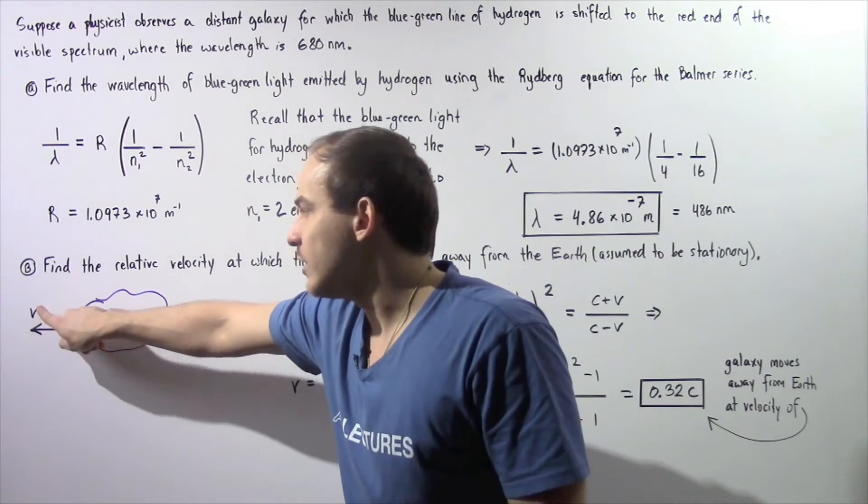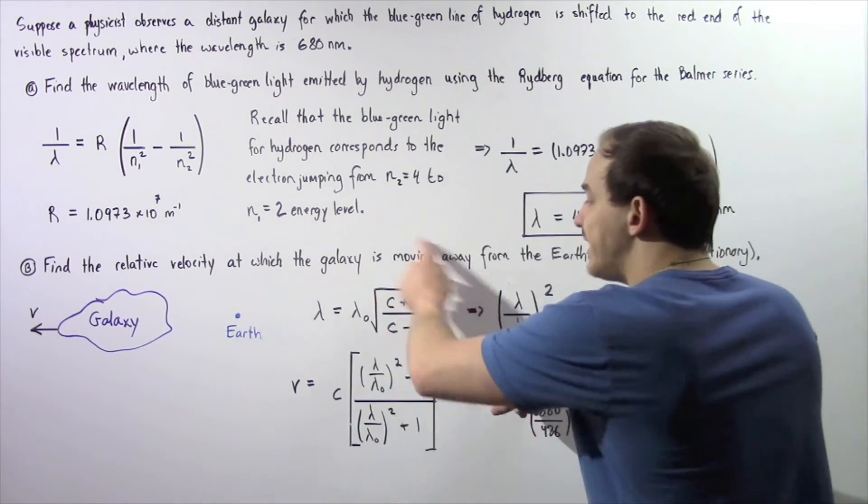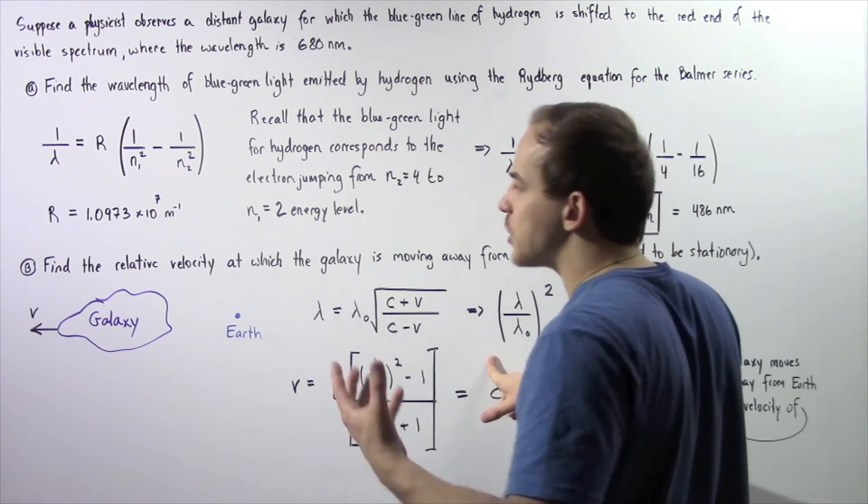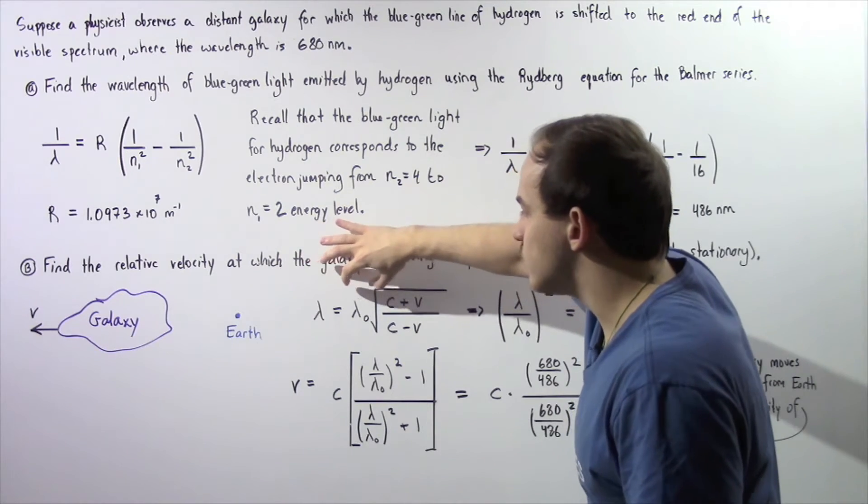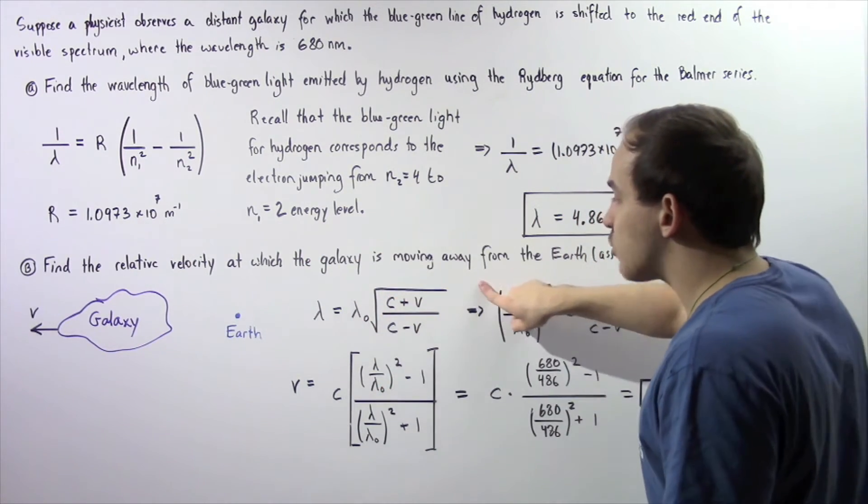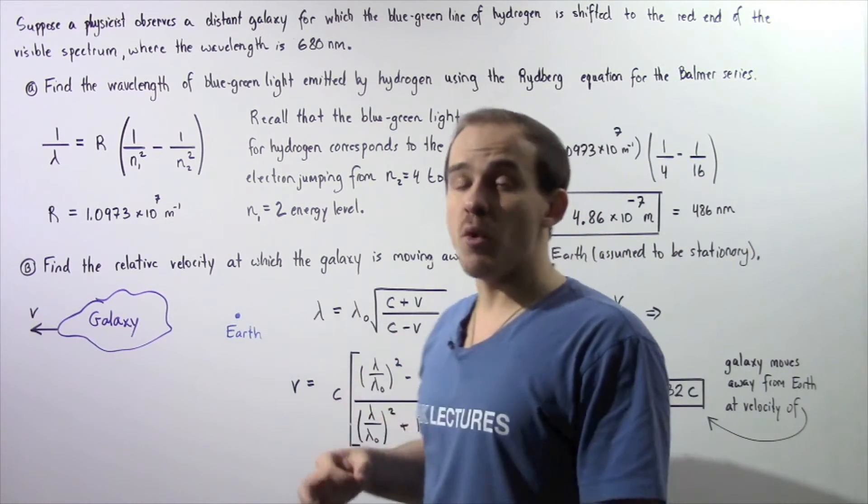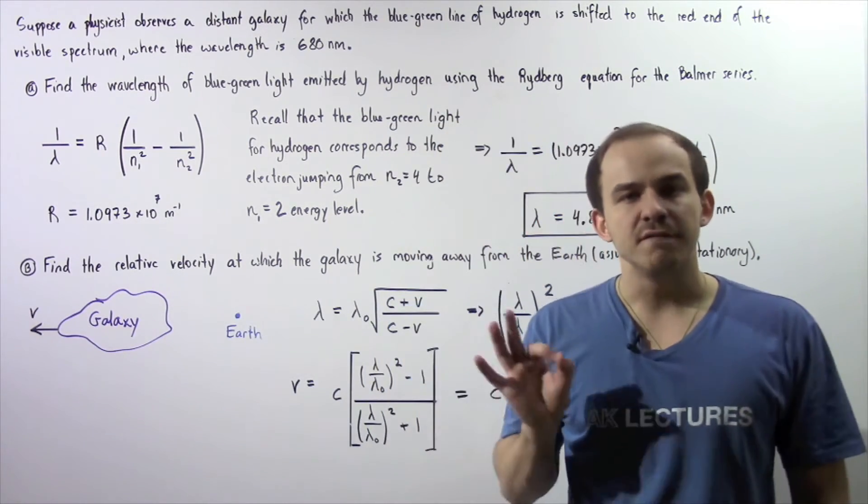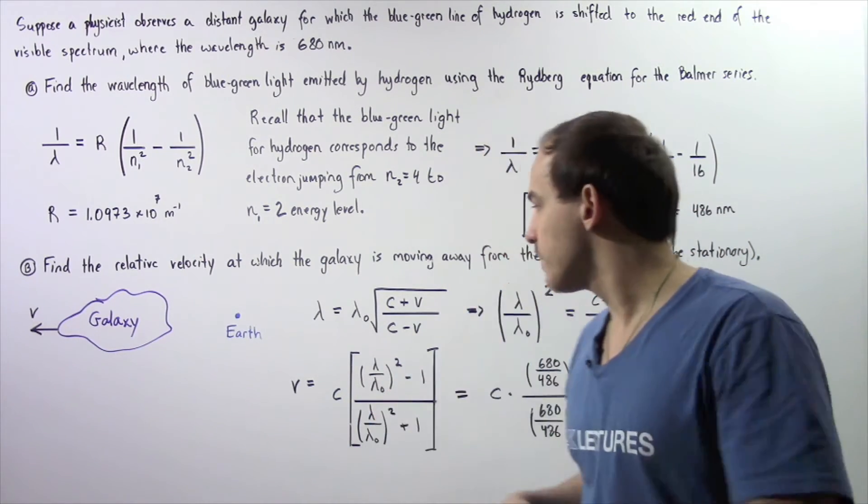We want to calculate what V is and we're going to use the following equation that we derived in the lecture on the Doppler effect for light. λ is equal to λ₀ multiplied by the square root of C plus V divided by C minus V, where C is the speed of light in a vacuum and V is the velocity we're looking for.